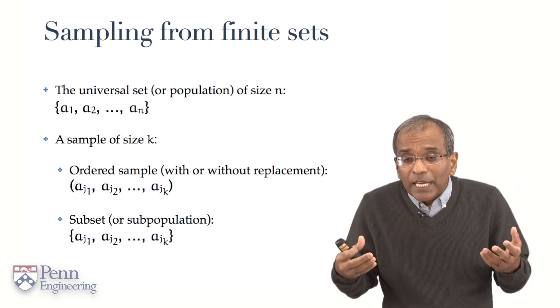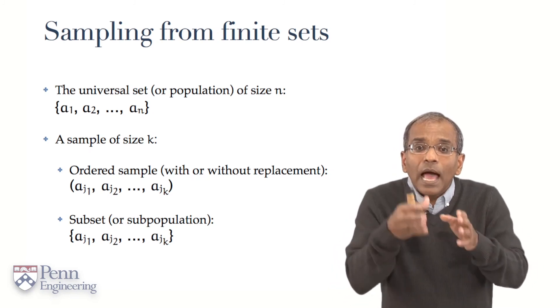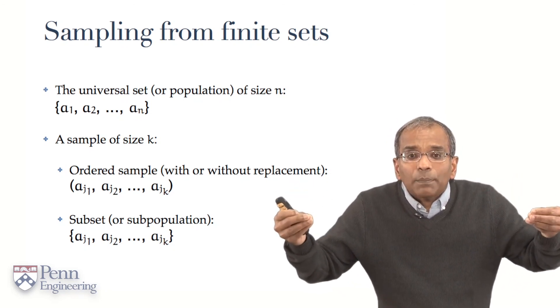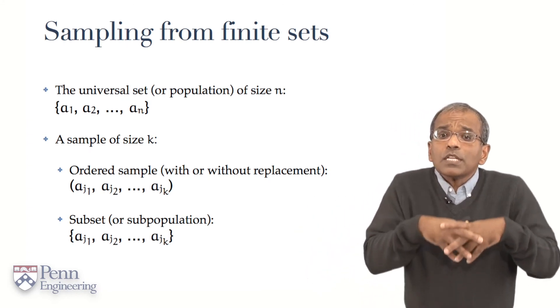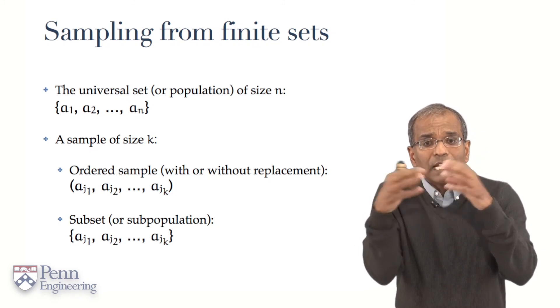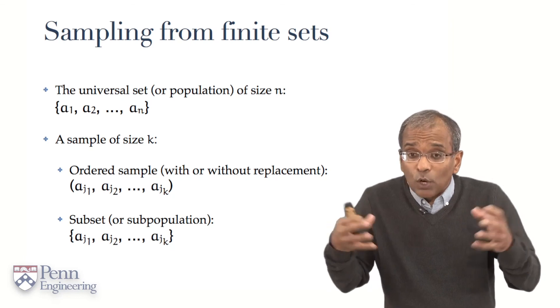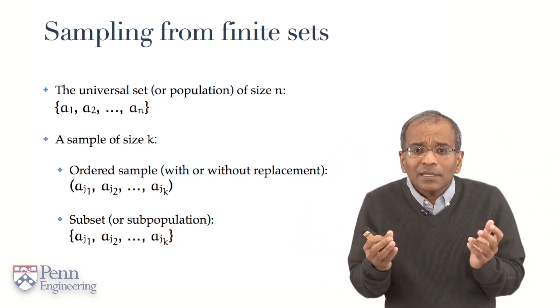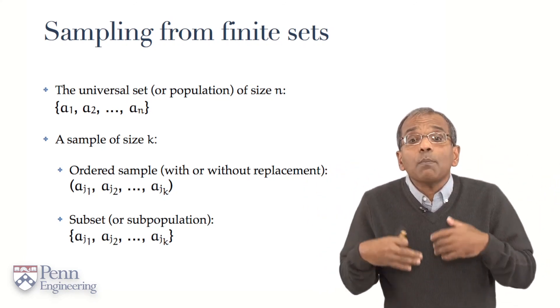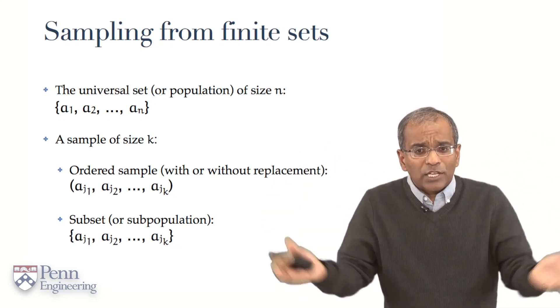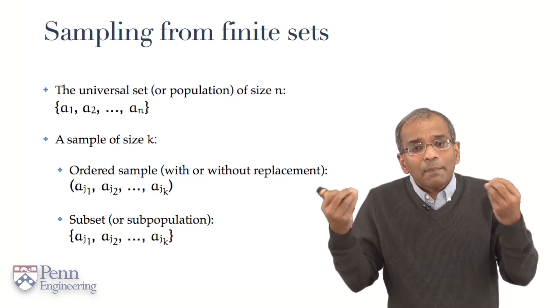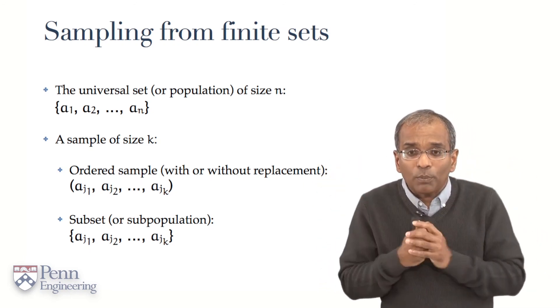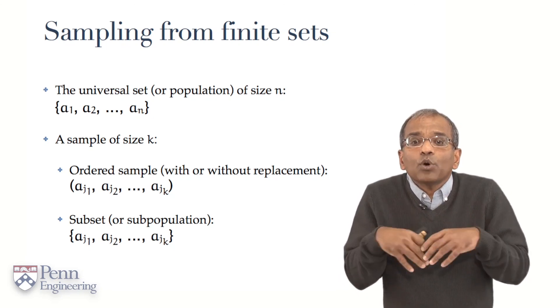If the sample is with replacement, then elements of the original population could be repeated in the sample at various locations. If the sampling is without replacement, then each element in that sample is unique and cannot be repeated. What about if one does not care about order? We promptly encase them in curly brackets and say, this is a subset, or colloquially, the subpopulation in which we are interested. Here is the abstract setting: a finite population of n elements, a sample of size k, the sample may be ordered with or without replacement, in which case we encase it in round brackets, or it could be unordered, a subset, in which case we enclose it in curly brackets.